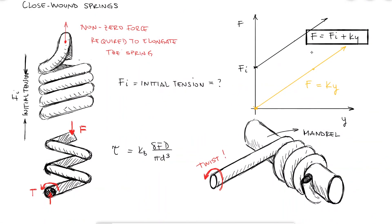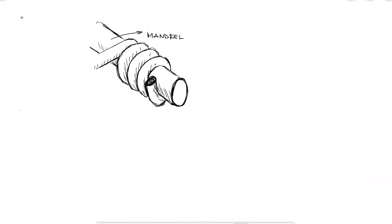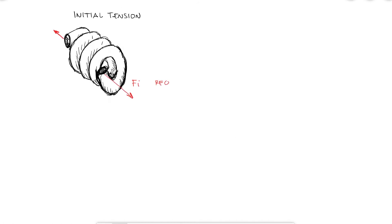Just to reiterate, this initial tension is caused by twisting the wire as it is wound onto the mandrel. As soon as you bring the spring out of the mandrel it will have this initial tension locked since the spring cannot get any shorter.